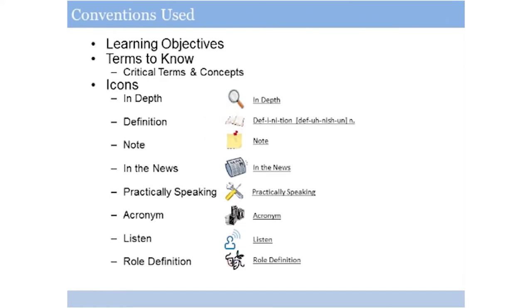One of the key tools you'll have at your disposal in this particular program is to be able to print a copy of your courseware to work along with us as you're working through the course. The courseware uses a set of consistent conventions throughout, including chapter learning objectives, key terms and concepts to know, and certain iconography that we use to call out certain examples as we work our way through the text. As you're going through the course online, we encourage you to print out a copy of the courseware and follow along with that as well.